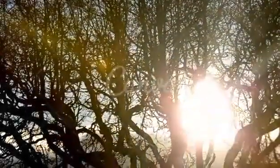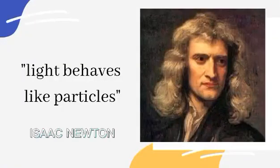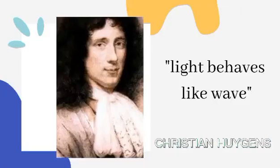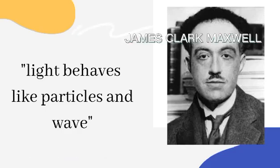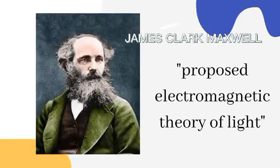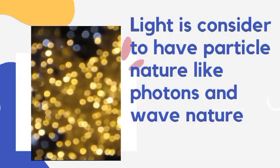Different scientists spent their time understanding light behavior. These include Isaac Newton, who believed that light behaves like a particle; Christian Huygens, who believed that light behaves like a wave; Louis de Broglie, who believed that light can be both particles and a wave; and James Clerk Maxwell, who proposed the electromagnetic theory of light. Light is considered to have both particle-like photons and wave nature.